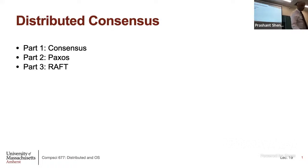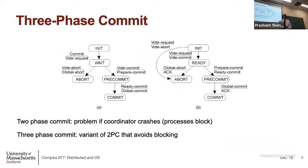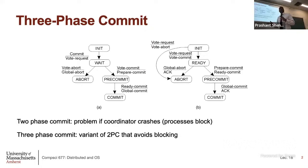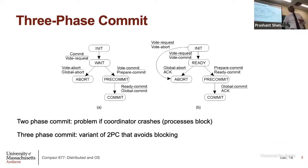Let us start with consensus. But before we do that, I want to finish one slide I did not get to last time. We were talking about distributed commit and I presented the approach called two-phase commit. Two-phase commit is essentially a way for a coordinator and a set of nodes to agree on whether to commit an operation or not. It is an all-or-nothing: either everybody commits or no one commits. We want to ensure a consistent decision for every commit operation.